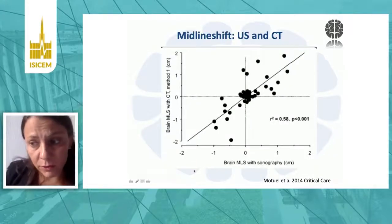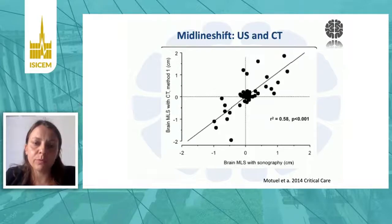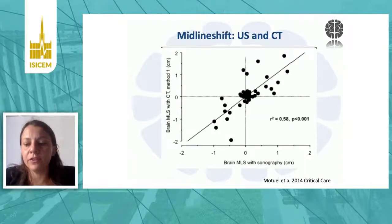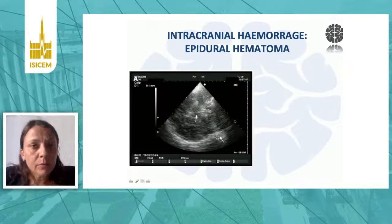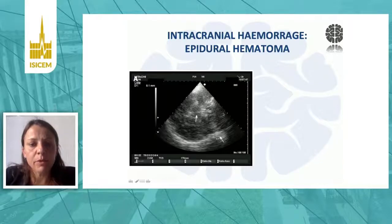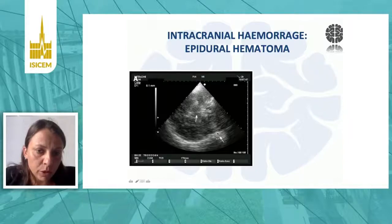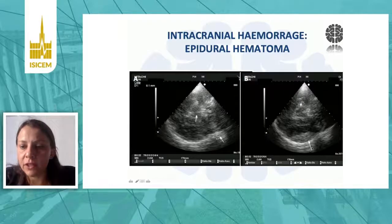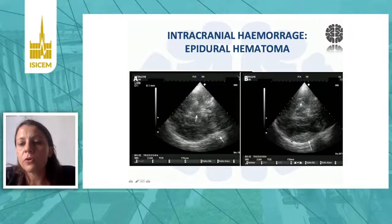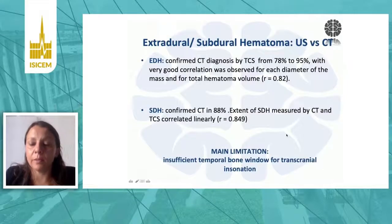There is an important correlation between ultrasound and CT findings, with some dispersion of the data. The same applies to intracranial hemorrhage. Here is an example of a patient who arrived to our ICU where we noticed a bit of blood near the contralateral temporal bone. After a few hours, the patient underwent neurological deterioration, and with brain ultrasound we identified a hematoma with the typical shape of an epidural hematoma.